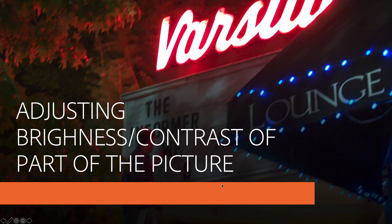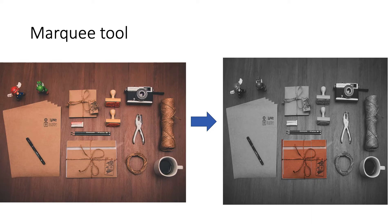In this lecture I'll teach you how to adjust the brightness or contrast of part of a picture. Many times you need to do that in order to pop a certain part of the picture. Here is an example: on the left you see an image of various objects on a table, and what we want to achieve is to highlight the folder in the middle which has string and knots around it.